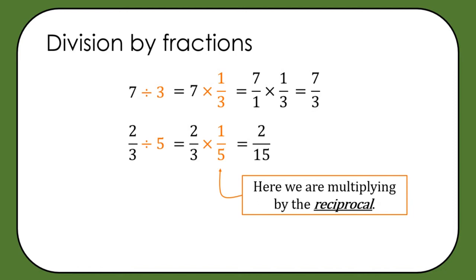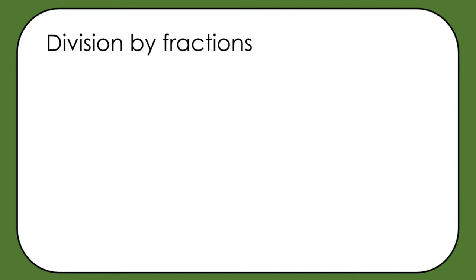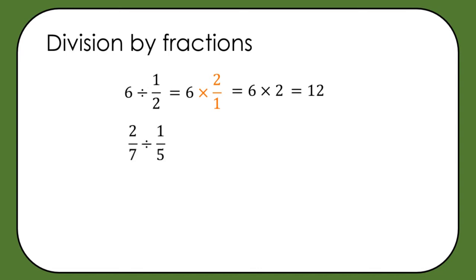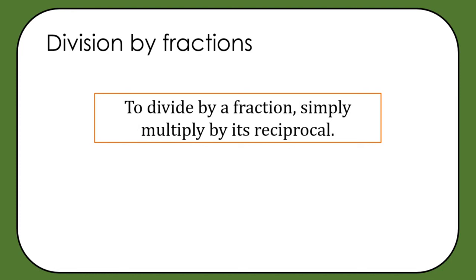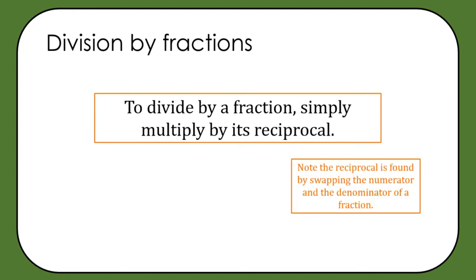A division can always be written as a multiplication by multiplying by the reciprocal, where the reciprocal is found by swapping the numerator and the denominator. So 6 divided by a half is the same as 6 multiplied by 2 over 1, which equals 12. And 2 over 7 divided by one fifth is the same as 2 over 7 multiplied by 5 over 1, which gives 10 over 7. To divide by a fraction, simply multiply by its reciprocal.